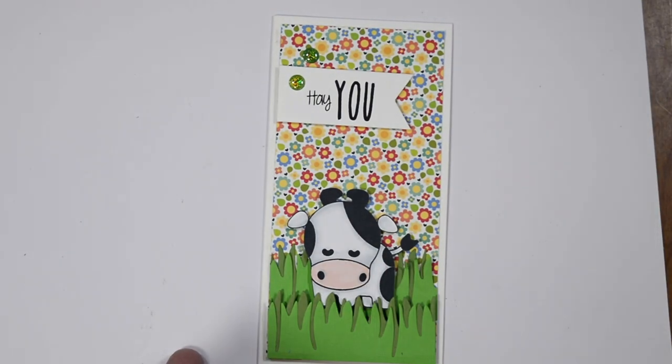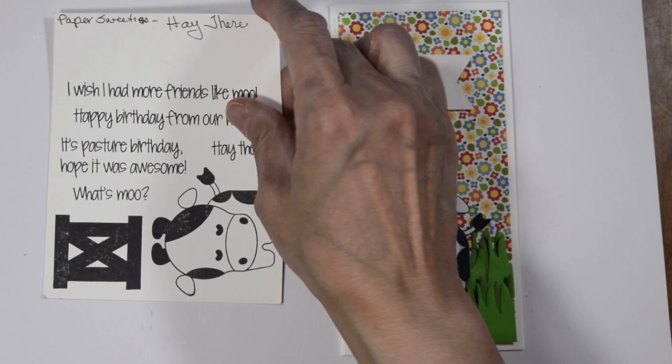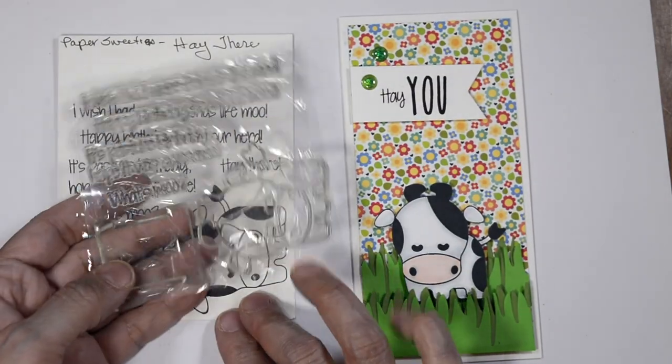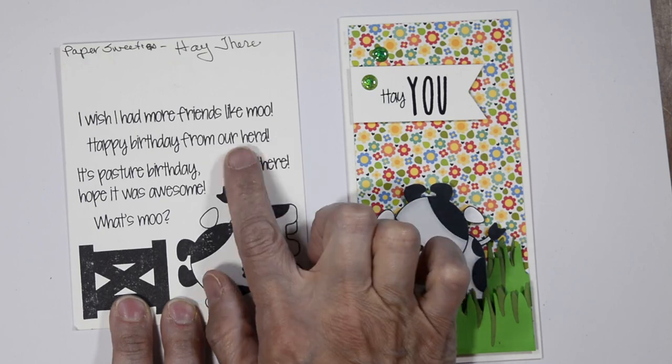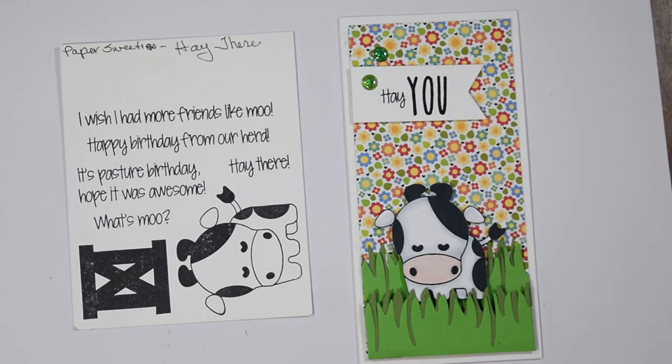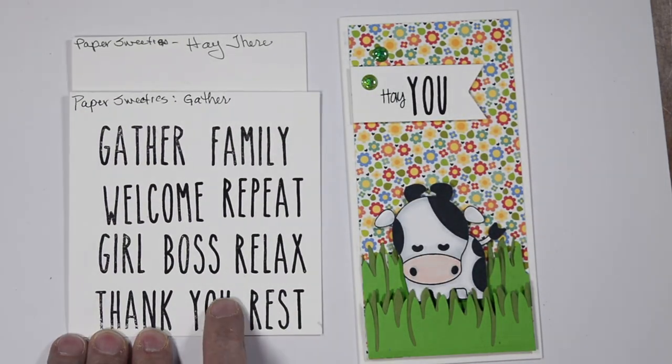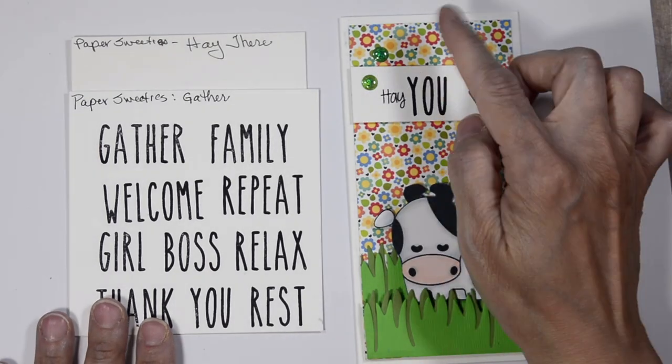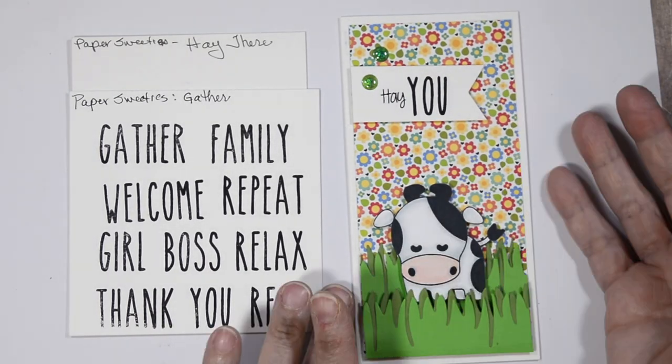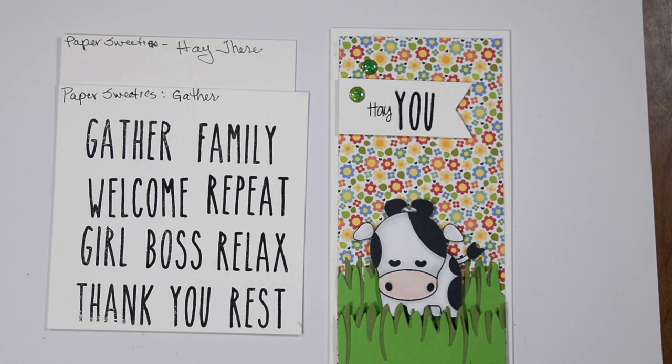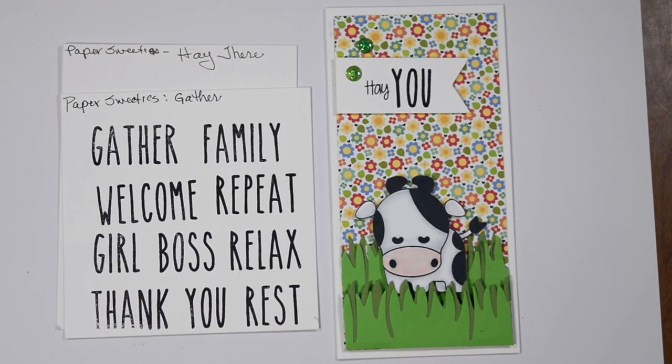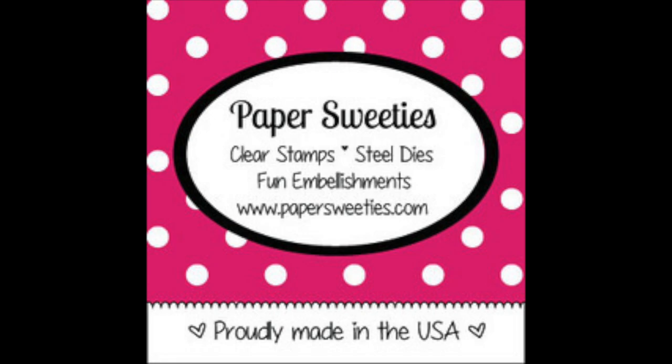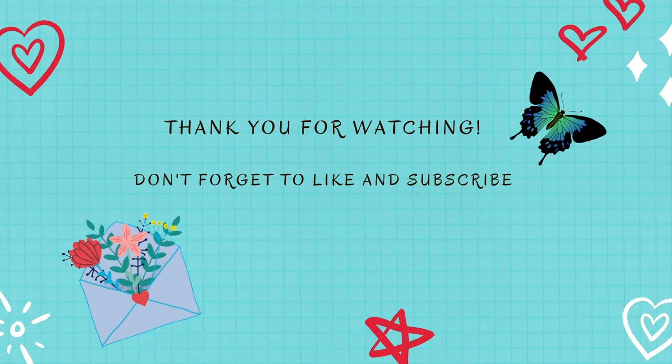So again we use our gather sentiment strip and the hey there stamp set with our little cow. We masked off there and used the U from gather. We added a little Doodlebug paper to add to the cuteness. Thank you so much. I hope you found some inspiration. Don't forget to hop along with the rest of the design team for more fun cards.